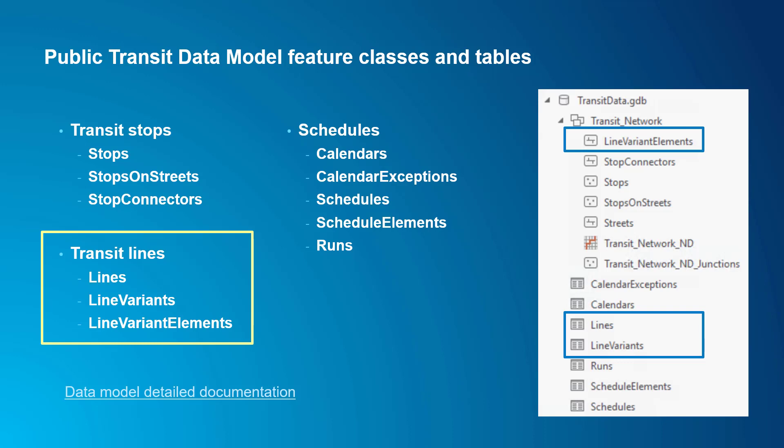Transit lines are modeled using a couple of related tables. The geographic component is called Line Variant Elements. This feature class has line segments representing direct connections between stops. The Line Variants and Lines tables are related tables that hold some additional characteristics about the transit lines, such as what type of transit it is, like a bus or a subway, and also relate to the schedule tables. The line characteristics are abstracted to these tables so they can be shared and not repeated for each Line Variant Elements feature. It's done this way for more efficient data storage.